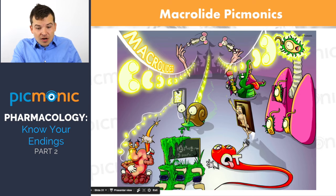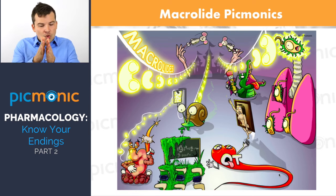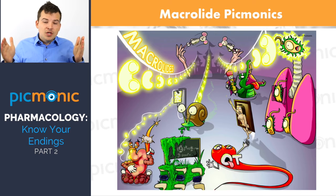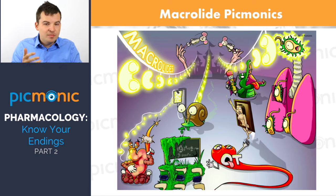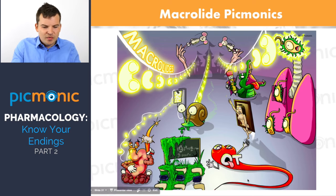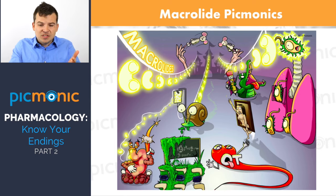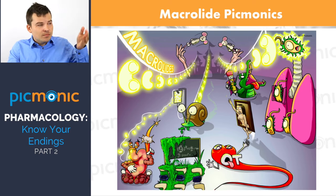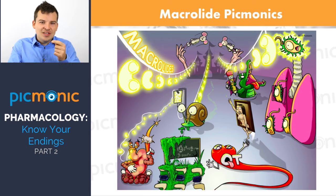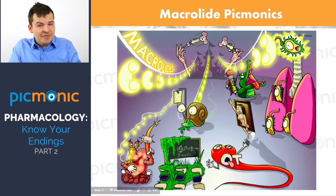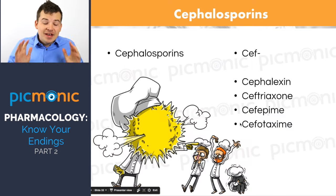We've got our stretched QT heart image in Picmonic to represent QT prolongation. If the QT interval is over 0.4 seconds, it's prolonged, which can cause R-on-T phenomenon, sudden death, and arrhythmias. Also, all antibiotics can cause GI distress, but macrolides specifically put patients at risk for C. difficile — a particularly unpleasant-smelling diarrhea.